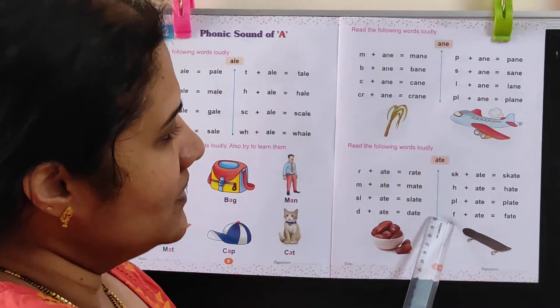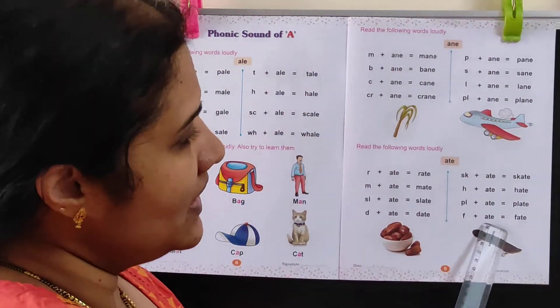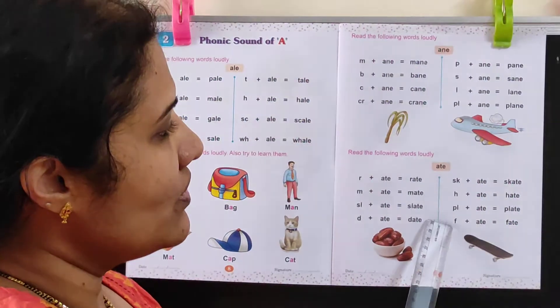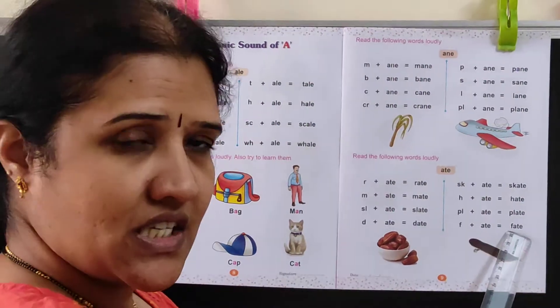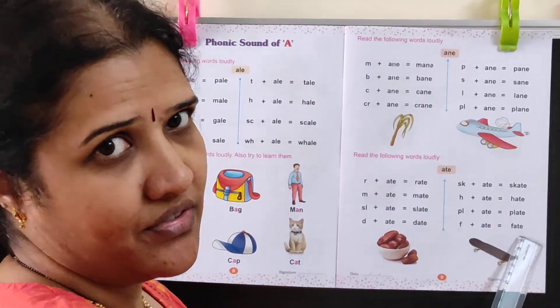Last one. F and ate. What is the sound of F? Fur. Fur and ate, Fate. F-A-T-E, Fate.